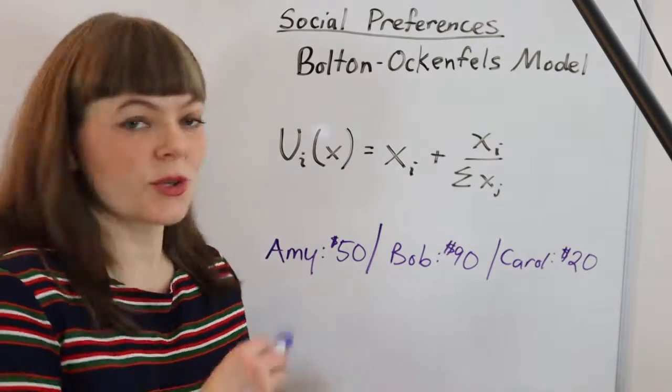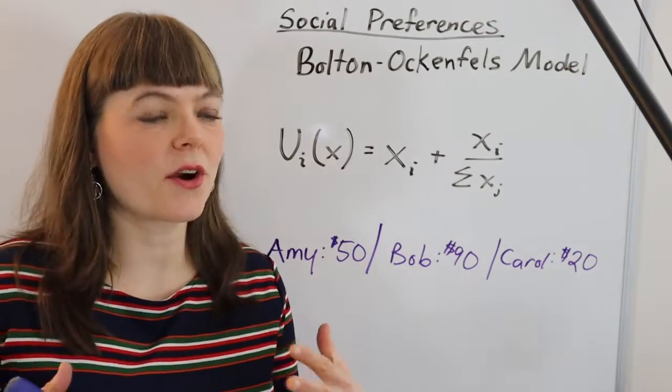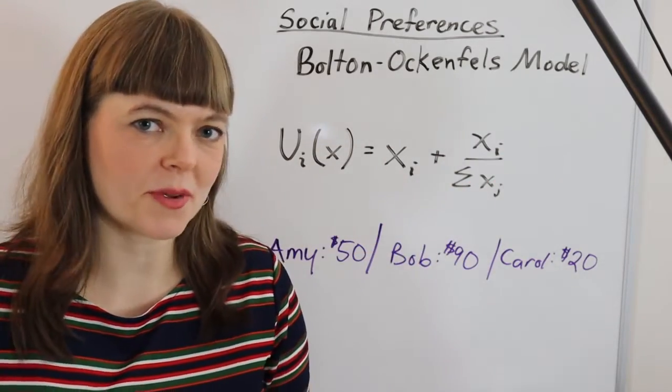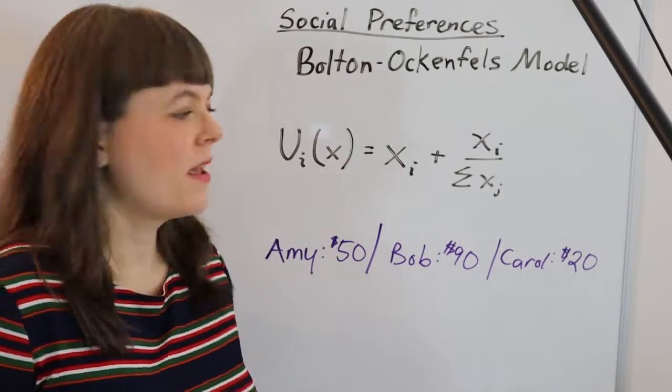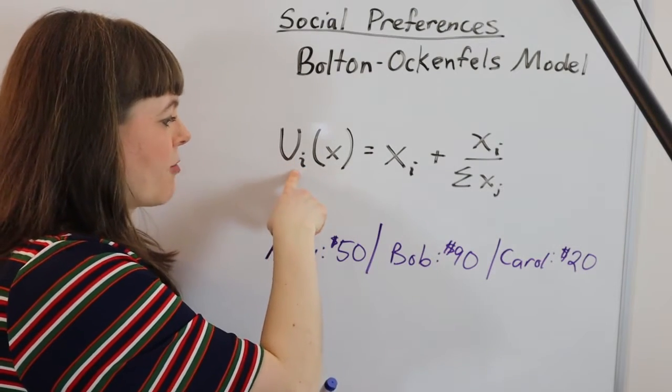I'm going over different models of social preferences that capture people's utility not only over their own outcome but also over the general outcome in the group. One simple model is the Bolton-Ockenfels model where the utility subscript here is the perspective it's from.